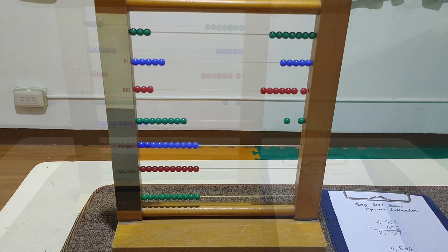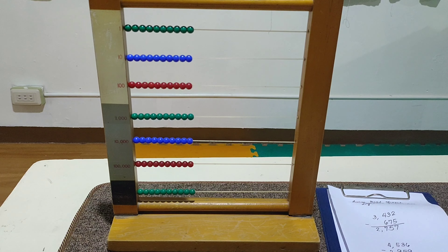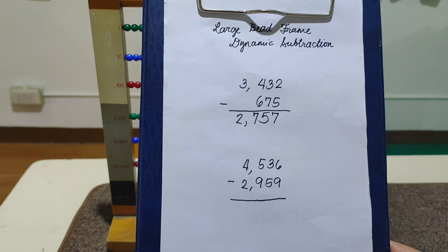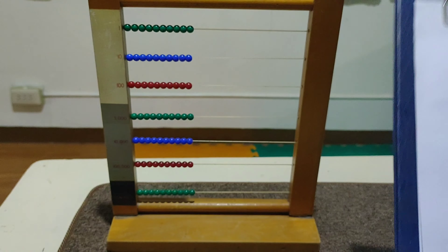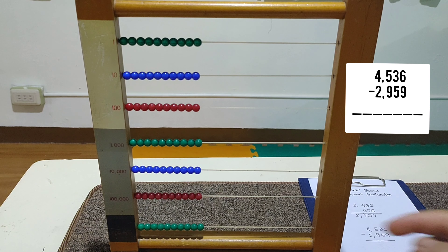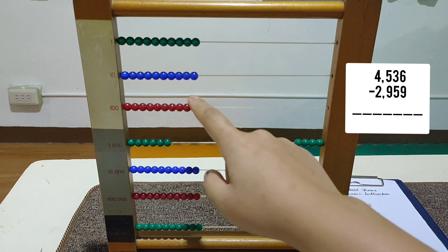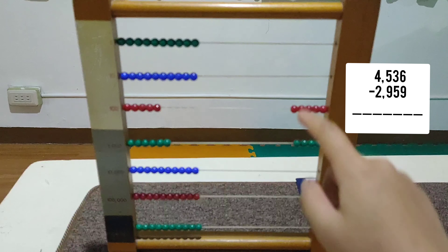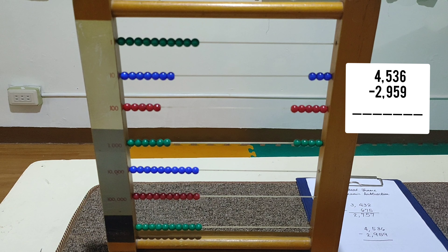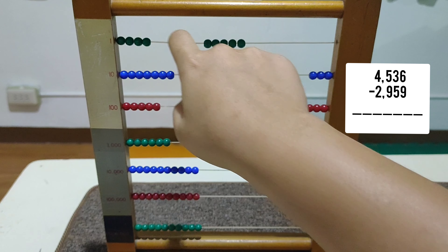Now let's go to the next problem. Now let's read our second problem. We have 4,536 minus 2,959. Let's build our subtrahend. We need 4,000 — 1, 2, 3, 4 — and 500 — 1, 2, 3, 4, 5 — and 3 tens — 10, 20, 30 — and 6 units — 1, 2, 3, 4, 5, and 6.